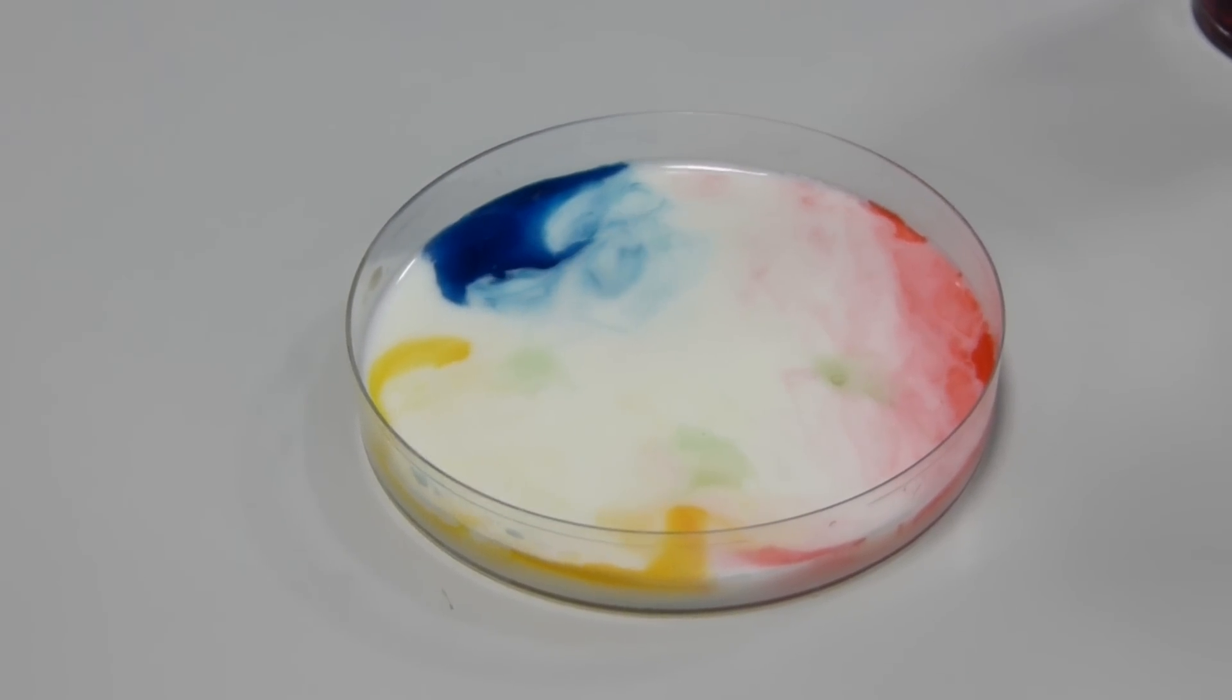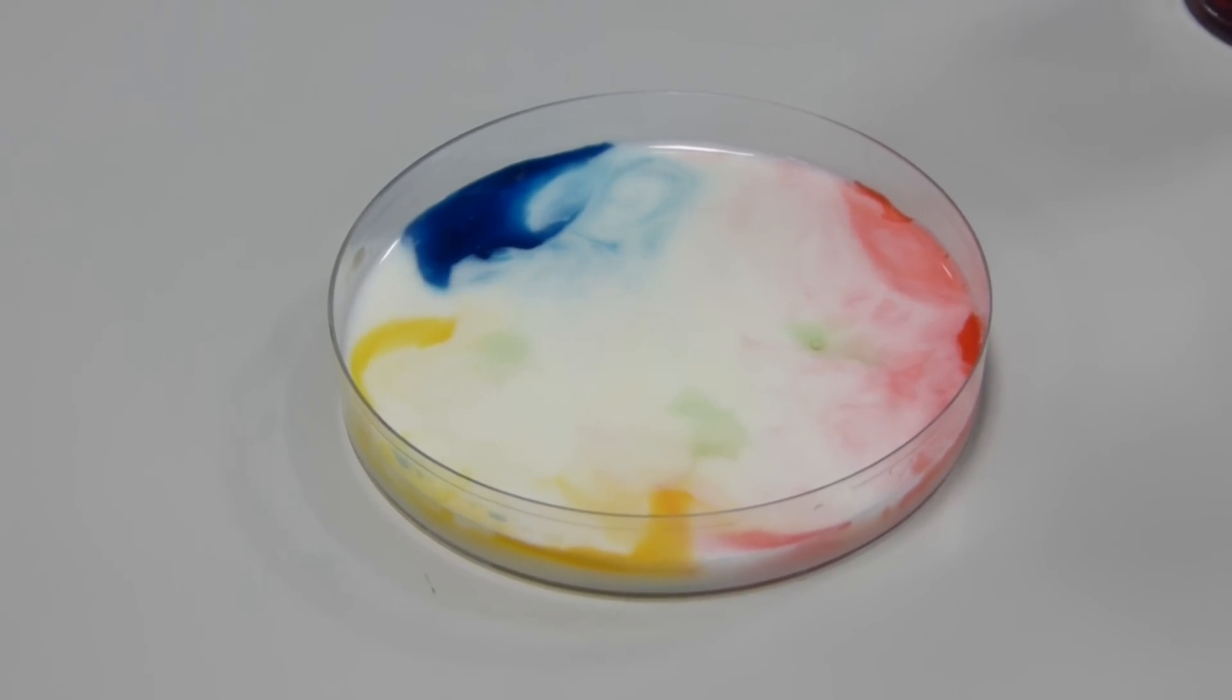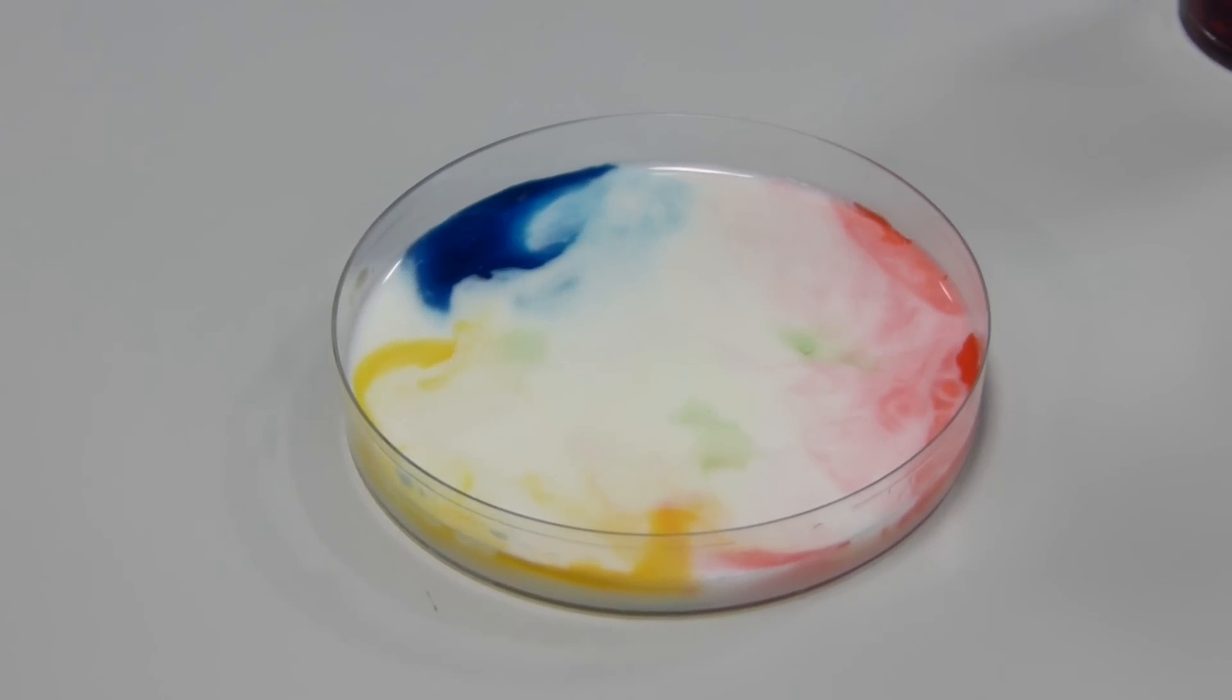And the yellow is going to sooner or later go with the blue. This will help us form a rainbow inside the petri dish.